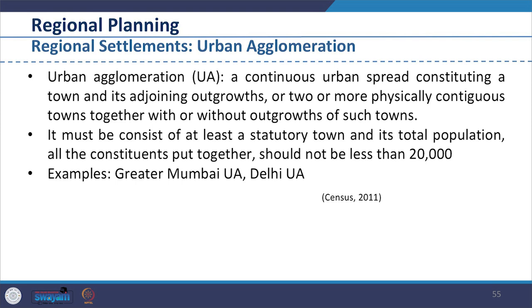As per the Census of India 2011, an urban agglomeration is defined as a continuous urban spread constituting a town and its adjoining outgrowths, or two or more physically contiguous towns together with or without outgrowths of such towns. An urban agglomeration must consist of at least a statutory town and its total population should not be less than 20,000. Examples include greater Mumbai urban agglomeration and Delhi urban agglomeration.